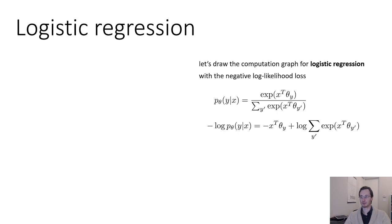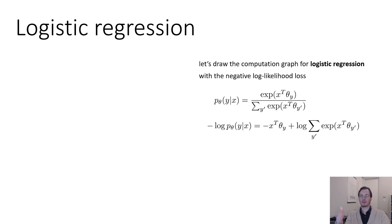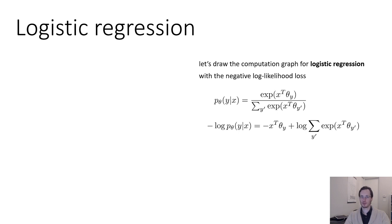This comes from the denominator of the softmax. When you take the logarithm of a ratio, it becomes log of the numerator minus log of the denominator. The log of the numerator is x transpose theta_y, and because we negate it to get negative log likelihood, that's where the negative sign comes from.